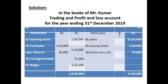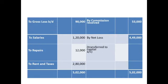Moving to the P&L account, we carry forward the gross loss of Rs. 4,49,000. It is written on the debit side as gross loss brought down Rs. 90,000. Expenses include salaries Rs. 1,20,000, repairs Rs. 12,000, and rent and taxes Rs. 2,80,000. Income: commission received Rs. 53,000. Taking the net balance, there is again a deficit — expenses exceed income, showing a net loss.